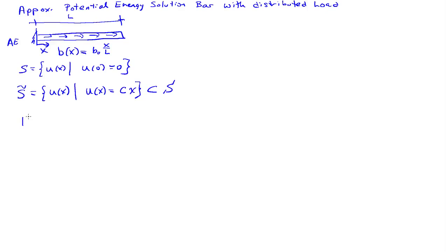So the governing potential energy for this system is a function of U of x equals the integral from 0 to L, one-half AE U prime squared, so that's the strain energy, minus the potential of the load. So we have a distributed load, so we have B naught x over L times the deflection at each point integrated over the length of the bar. So there's our total potential energy.